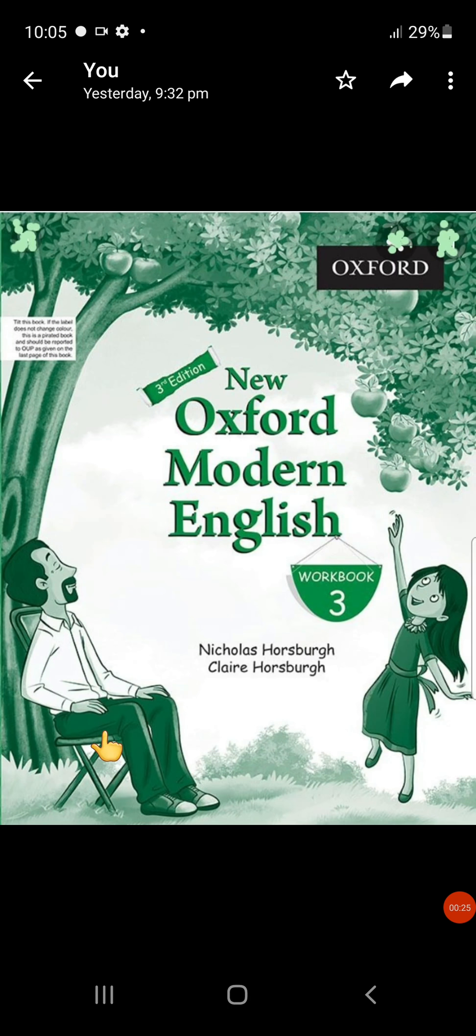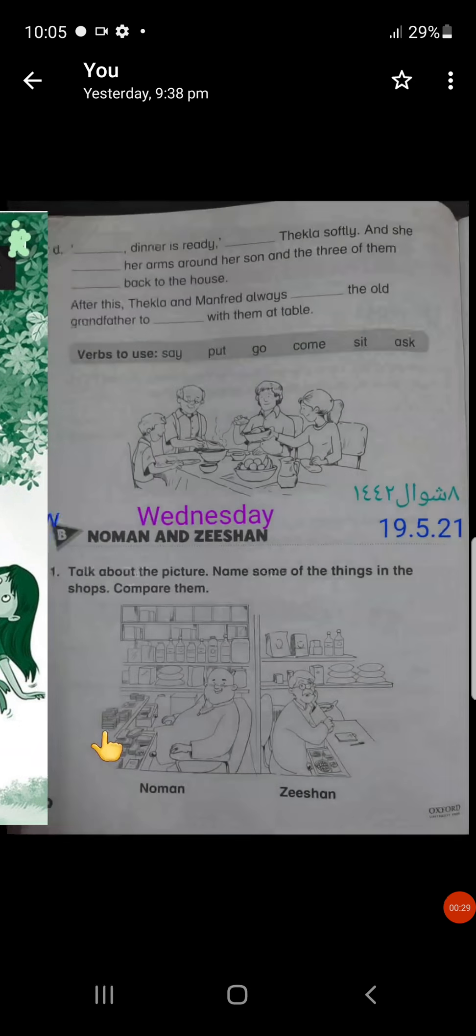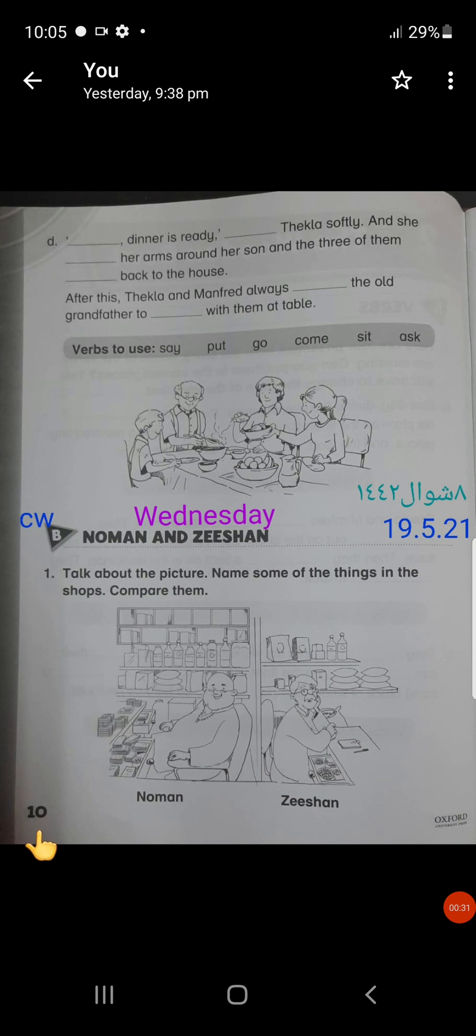You all have to take out your New Oxford Modern English Workbook 3 and then you have to turn to page number 10. On page number 10, you have to write down date. It's 19th May today, 8th Shawwal. Today is Wednesday and then CW. Always keep in mind that you must write all these things before starting your work.